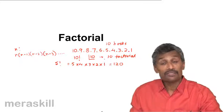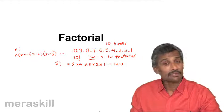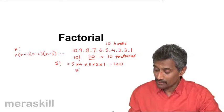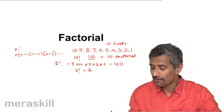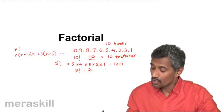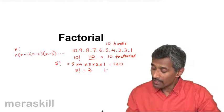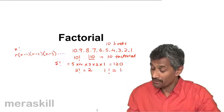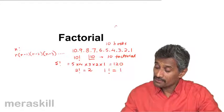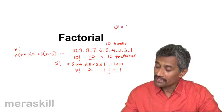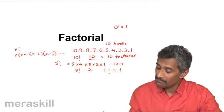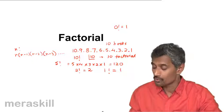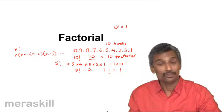There are certain things you need to understand: 2 factorial is 2 × 1, which is 2. 1 factorial is 1. But surprisingly, 0 factorial is also taken as 1. So: 0! = 1, 1! = 1, and 2! = 2.